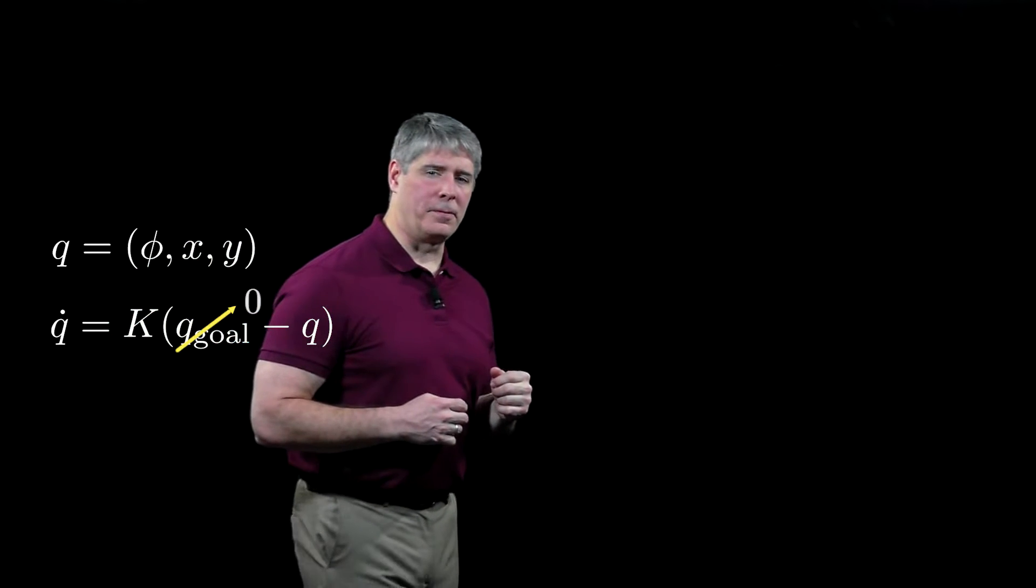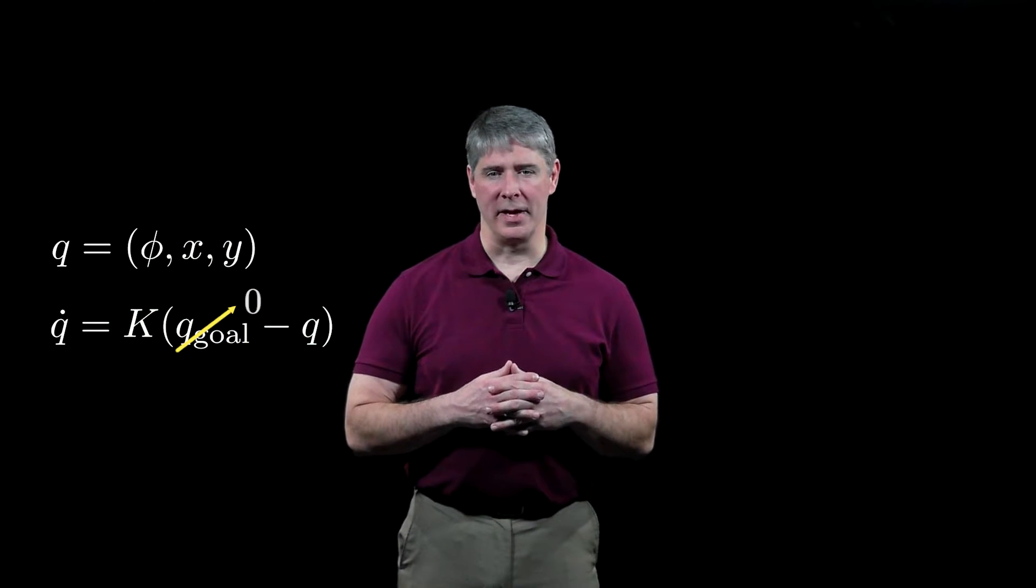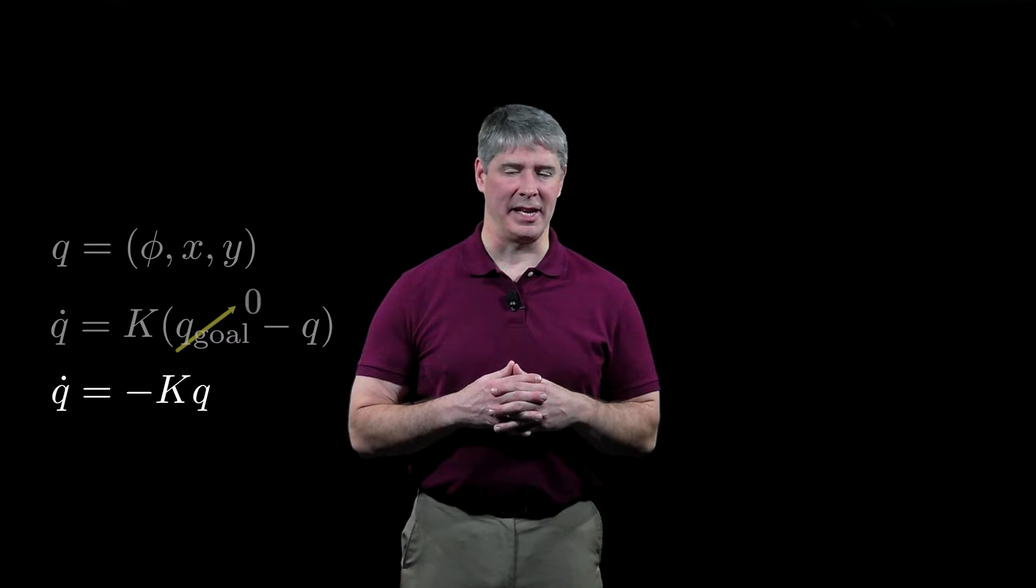We might as well choose the goal configuration as the origin, so this controller simplifies to Q dot equals minus K times Q.